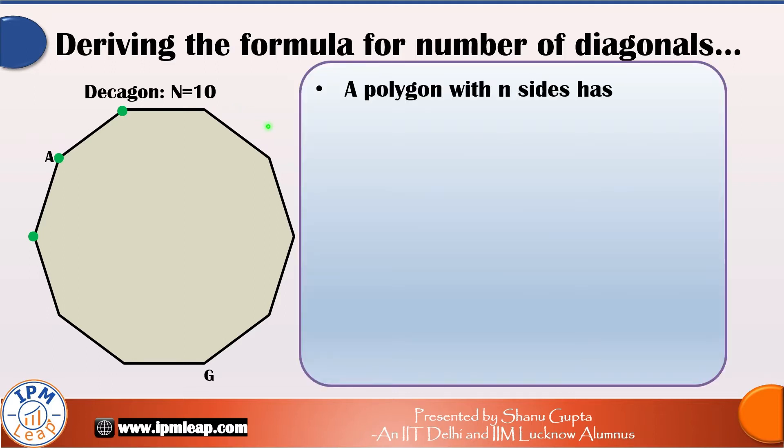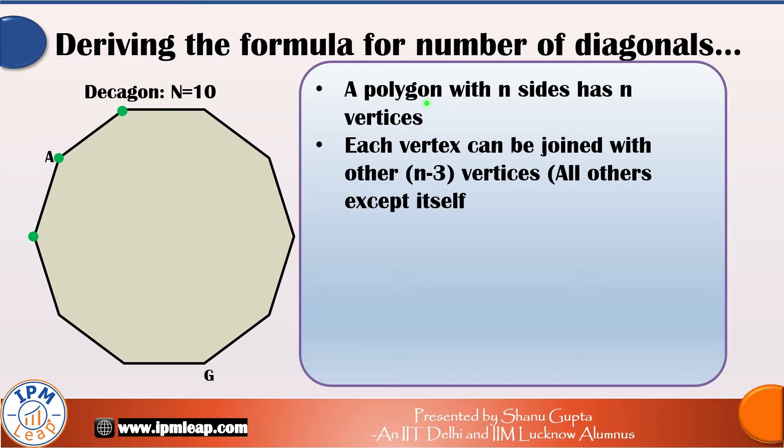It will have exactly n vertices. To draw a diagonal, each vertex can be joined with other n-3 vertices. That is all others except itself and the adjacent two. So there will be exactly n-3 diagonals originating from any vertex.